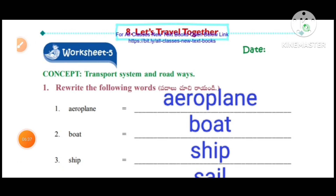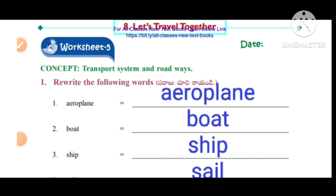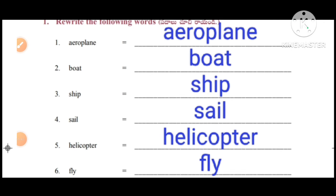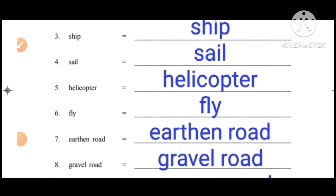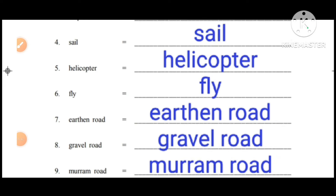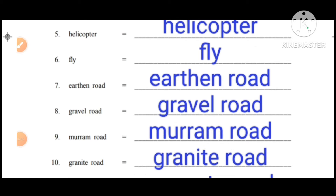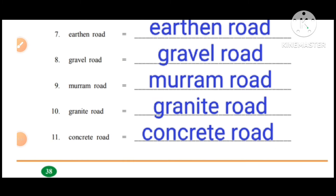Worksheet No. 5, concept: transport system and roadways. Rewrite the following words. First one: aeroplane, boat, ship, sail, helicopter, fly, earthen road, gravel road, murram road, granite road, concrete road.